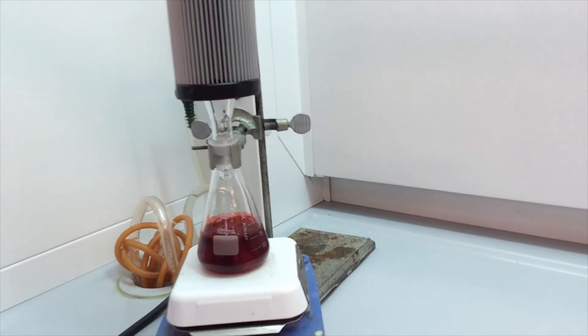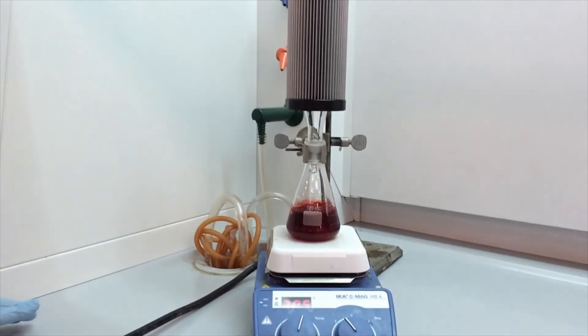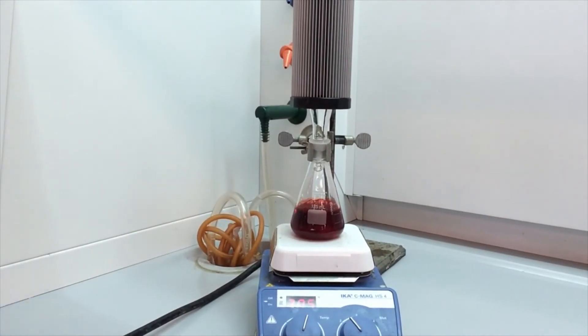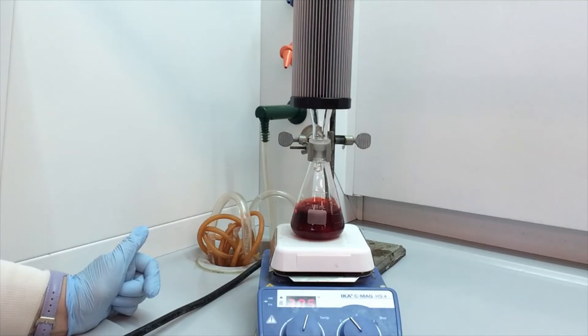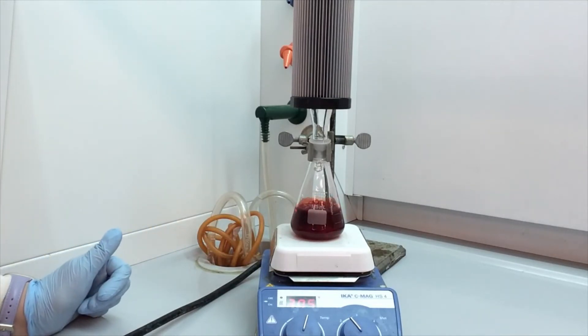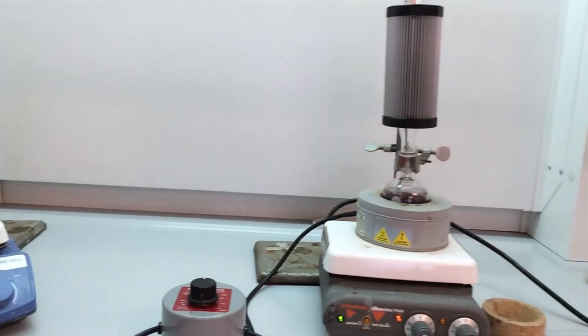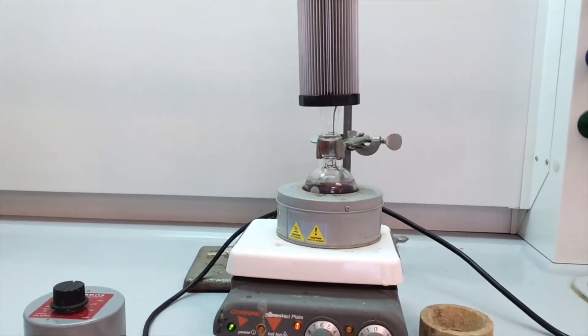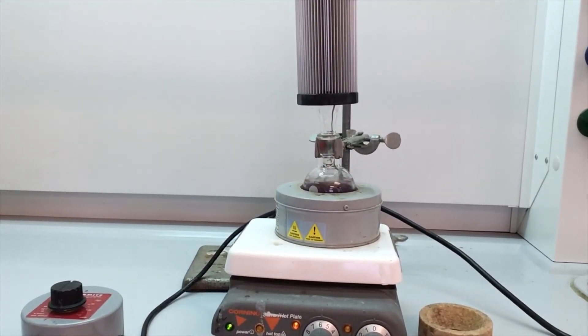So this type of flask takes a little bit longer to start heating up, because you're only heating the bottom of the flask, unlike the heating mantle with the round bottom flask. So over here, the entire bottom half of the flask is heating.